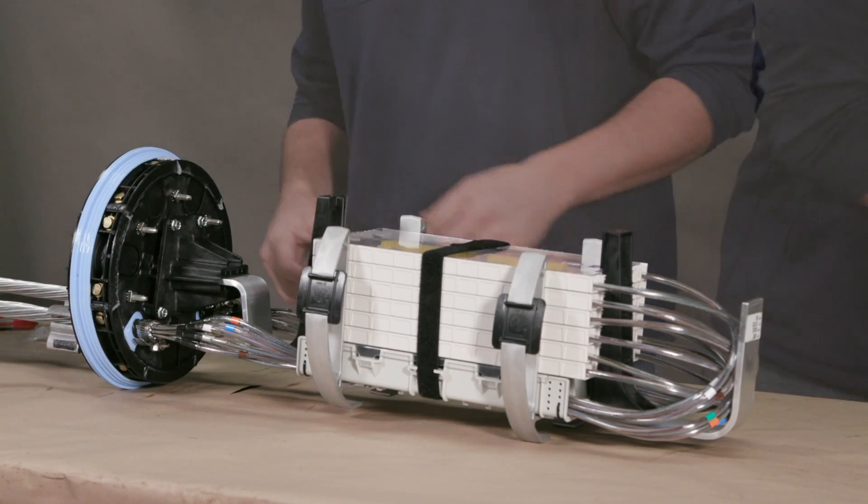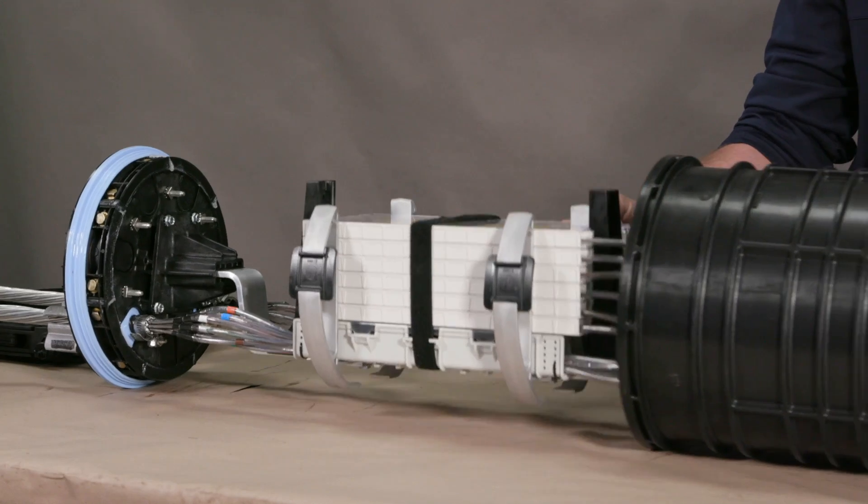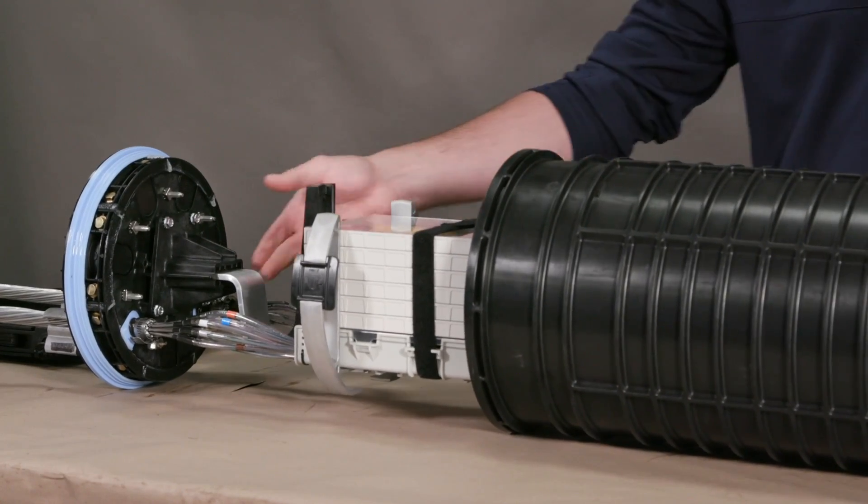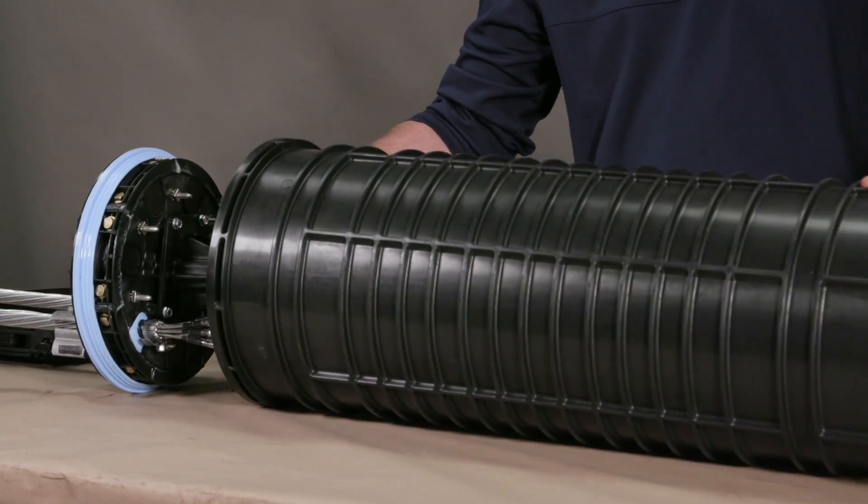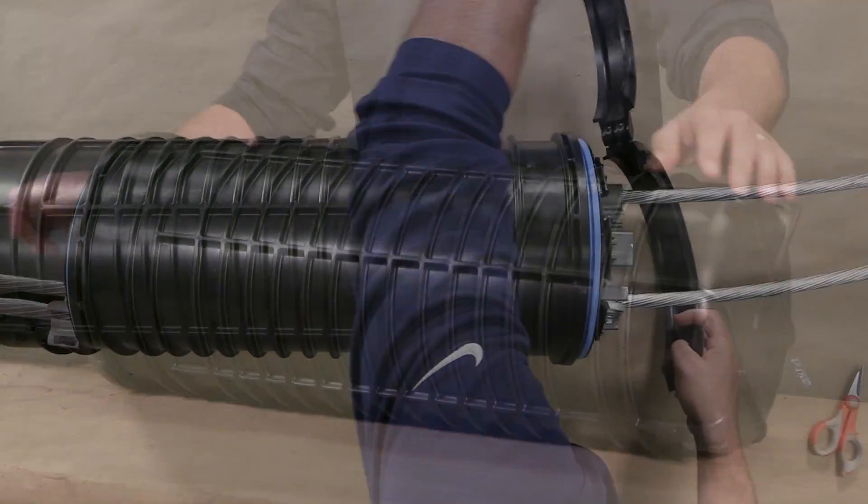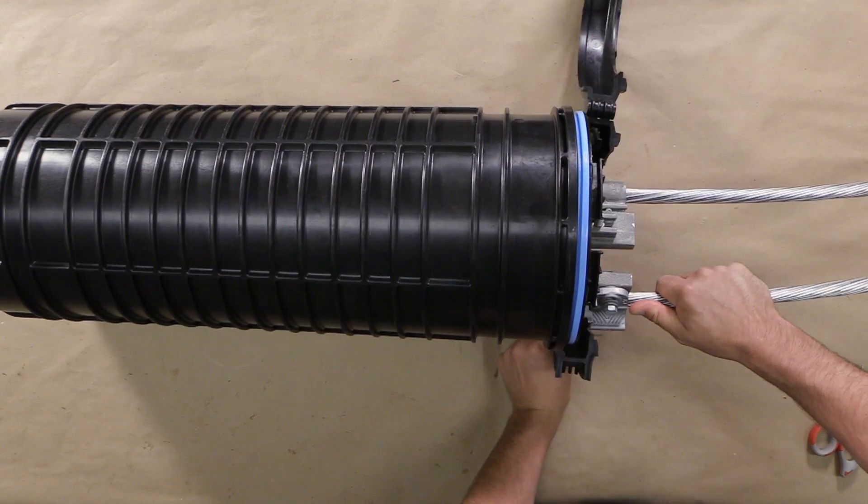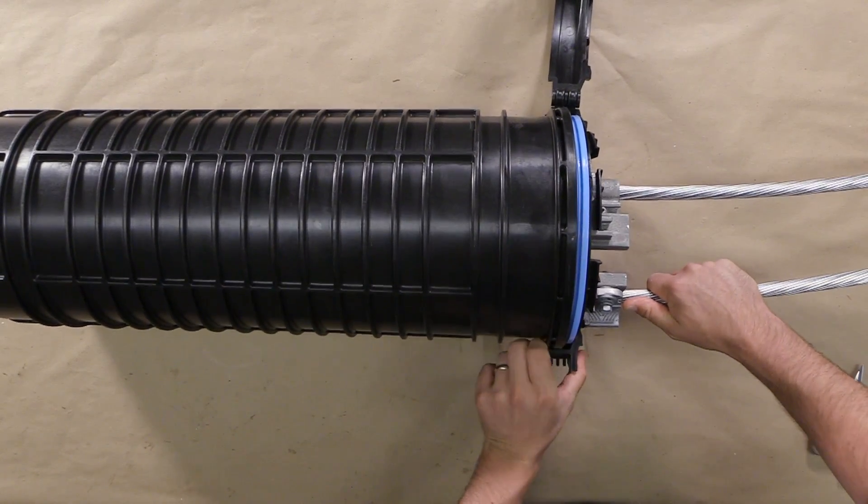Insert the organizer assembly into the coyote dome. Install the coyote end plate collar and secure the latch.